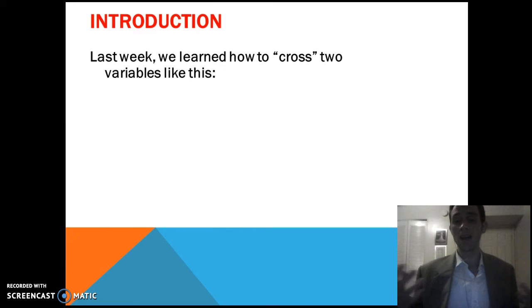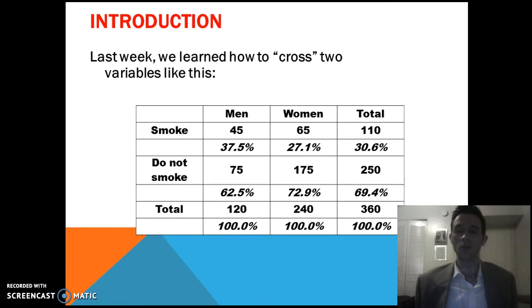To start off, you need to think back to last week. We're crossing two variables like this. We had an independent variable, and the categories of that are in the columns right here. Then we have a dependent variable, and the categories of that are in the rows. So we have to make sure to percentage this thing the right way. Specifically, we percentage through the categories of the independent variable. Then we read or interpret through the dependent variable.